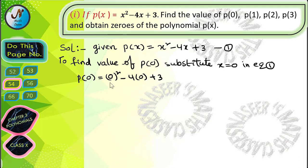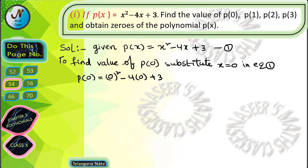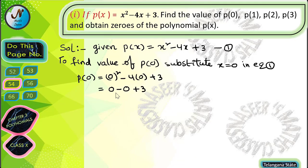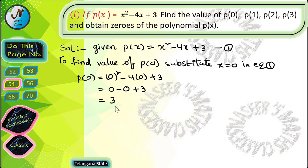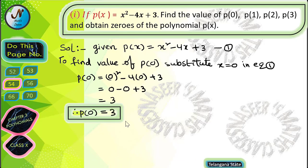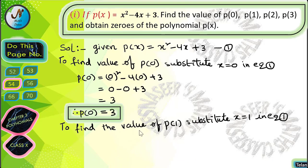p(0) = 0² - 4(0) + 3. After simplification we get 0 - 0 + 3, since 0² = 0 and 4 × 0 = 0. Therefore p(0) = 3.